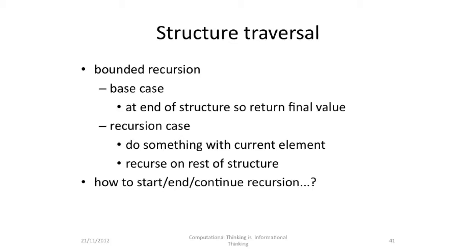In bounded iteration, typically we go from first to last and we only look at each element once. In an unbounded iteration, we might look at each element repeatedly. So we have to ask ourselves: how do we start the iteration, how do we continue the iteration, and how do we end the iteration? Another approach to repetition is through recursion. I think it's actually quite a natural way to structure a computation, in terms of a base case — where you're at the end of a structure, so you return a final value — and a recursion case, where you do something with a current element and then you recurse on the rest of the structure. Or you can turn it round and think about doing something to the first part of the structure and then doing the same thing to the rest of the structure.